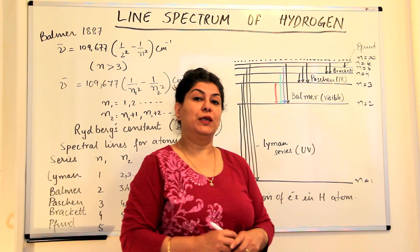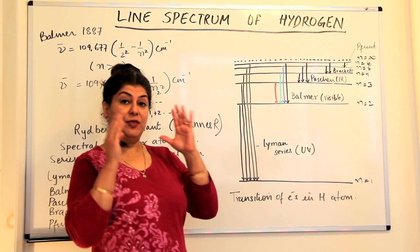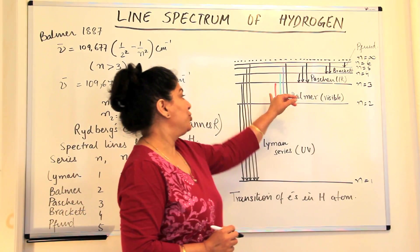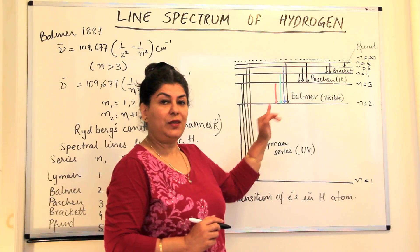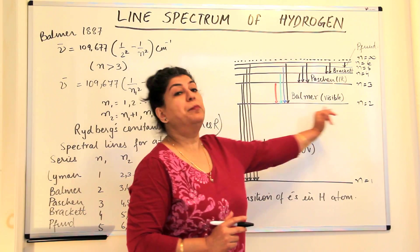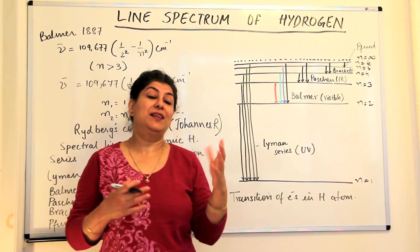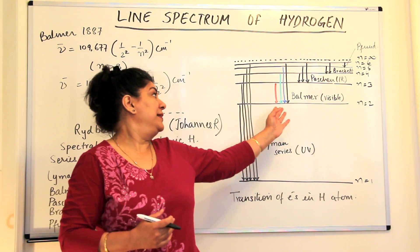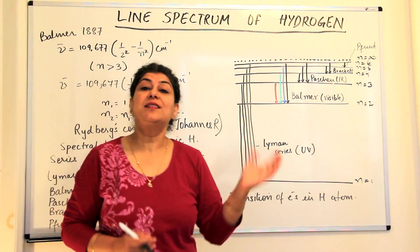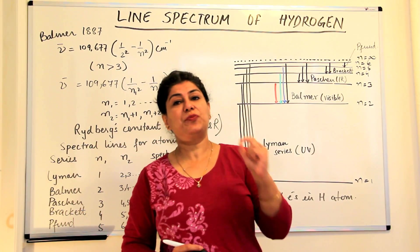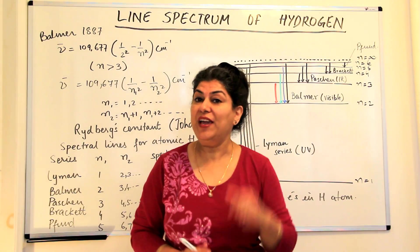When Balmer was working, he only saw the lines in the visible range. So he called these lines the Balmer series. And he gave a formula. He said that if we express these in terms of wave number, then we find a relationship.